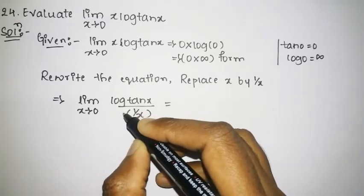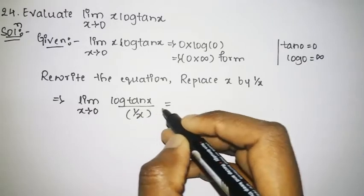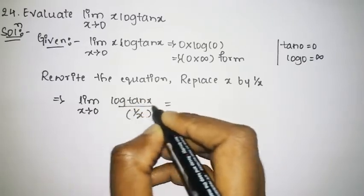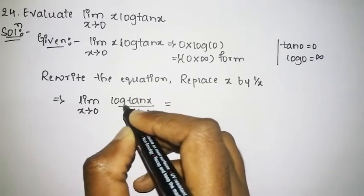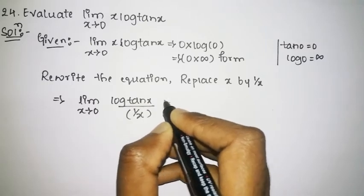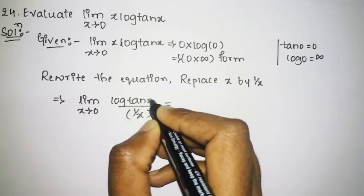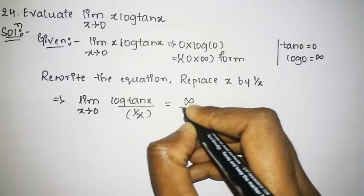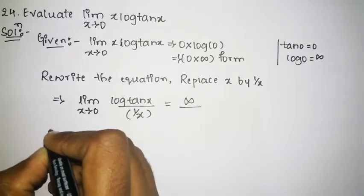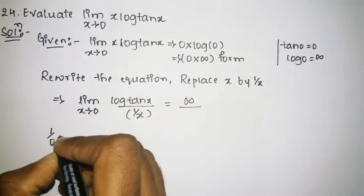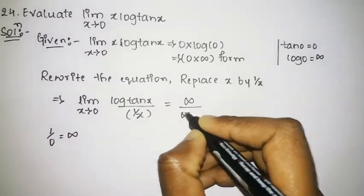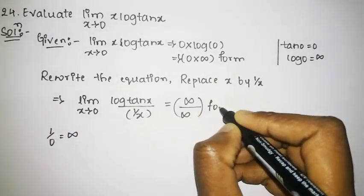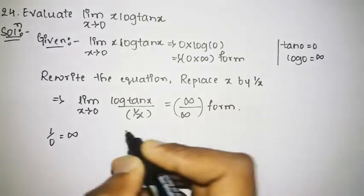Now substituting x tends to 0, we see that log of tan 0 gives log 0, which is infinity, and 1 divided by 0 is also infinity. So we have obtained the infinity by infinity form.